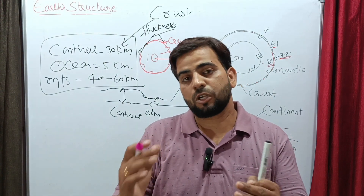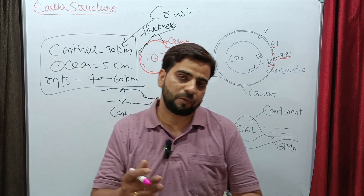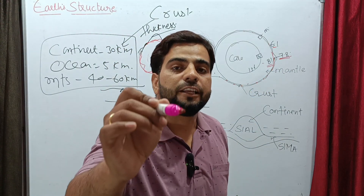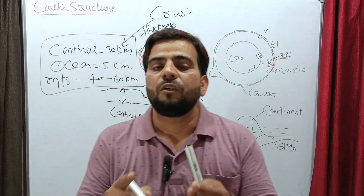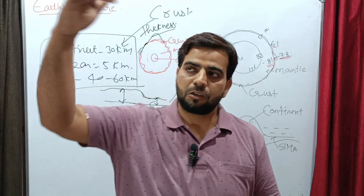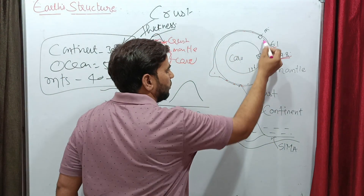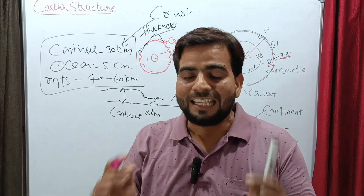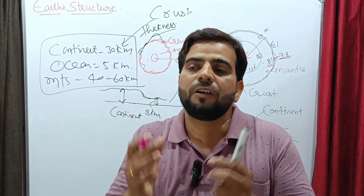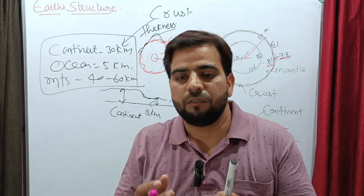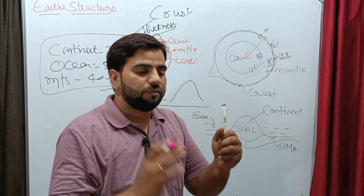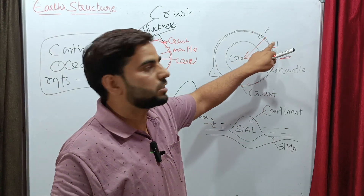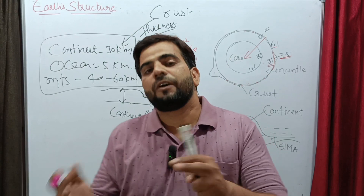You remember seismic waves from the previous class. When primary waves enter from the crust into the mantle, their speed decreases. As we move from the crust towards the core — from the outer surface to the center of the Earth — density increases, and therefore the speed of the primary waves decreases. This variation or discontinuity in speed, due to variation in density, is referred to as the Mohorovičić discontinuity, or Moho discontinuity, found between the crust and the mantle.